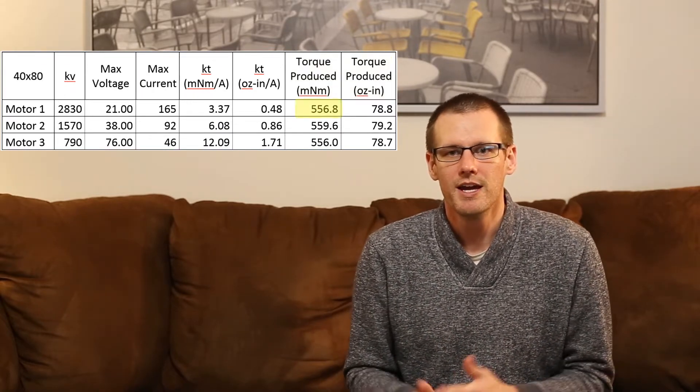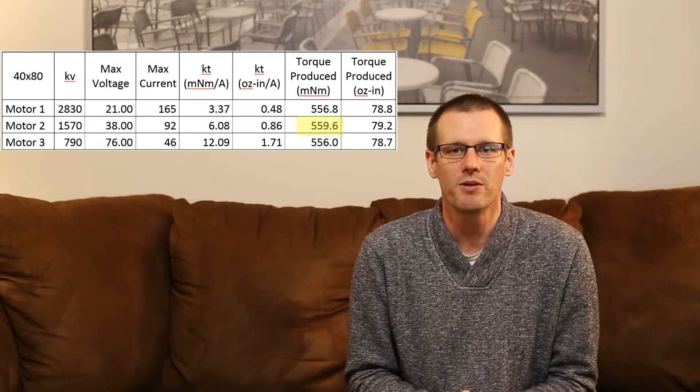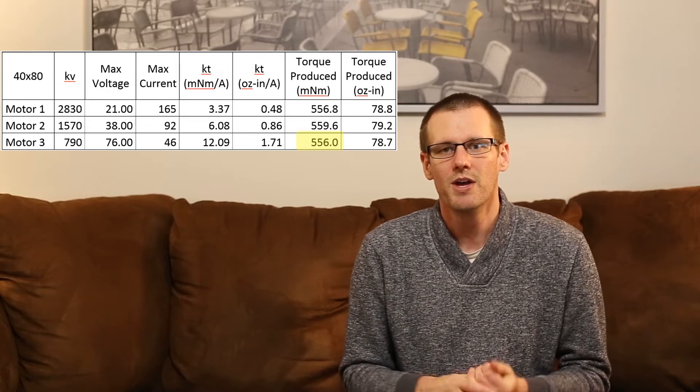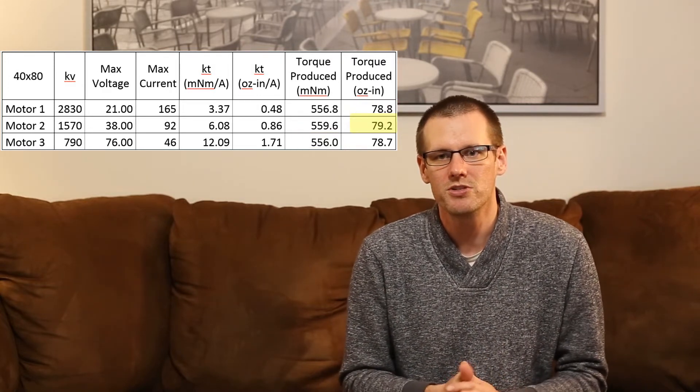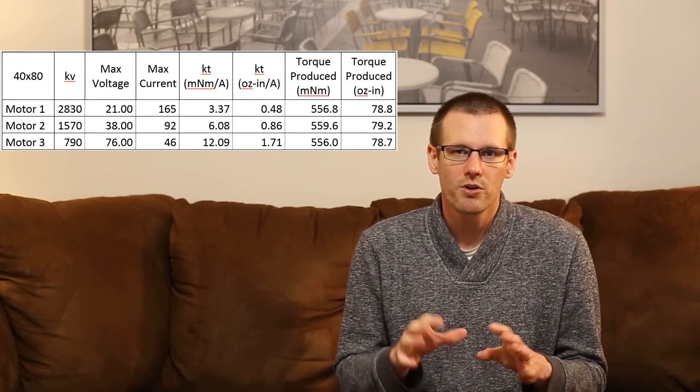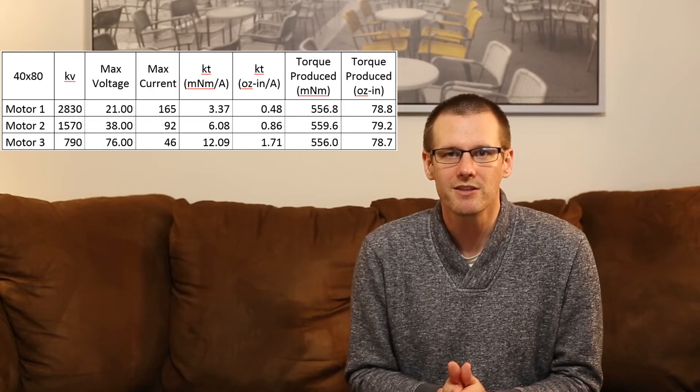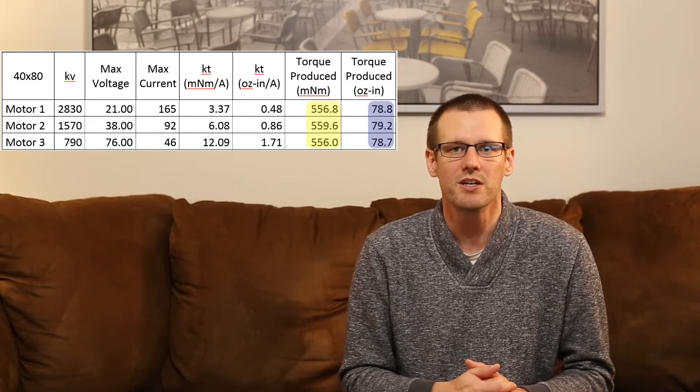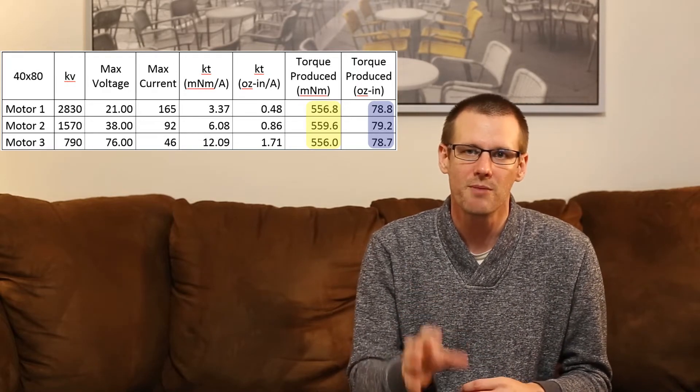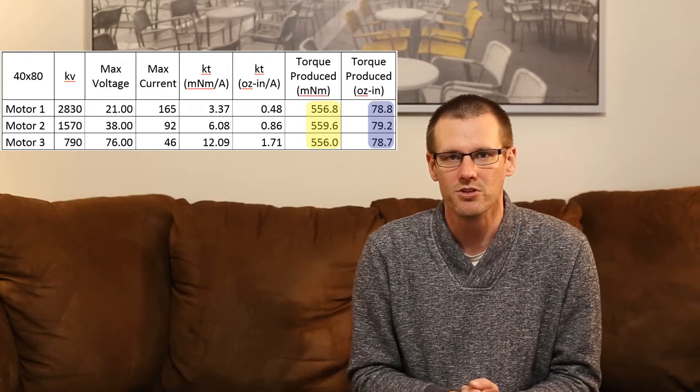So if we look at our first motor, motor number one is going to be rated at a total torque output of 556.8 with motor number two at 559.6 and the last one there at 556.0. Now if you look at the other units, we're at 78.8, 79.2 and 78.7 inch ounces of torque. So those are the total torque values of all of those brushless motors. Now right away, you can already establish that those numbers are essentially the same thing. In fact, the only reason there's a difference in those values is because of a small amount of rounding. So theoretically, those numbers would actually come out identical.